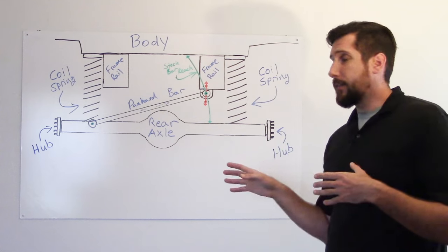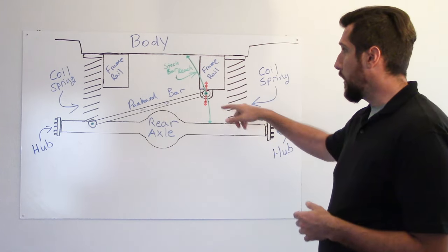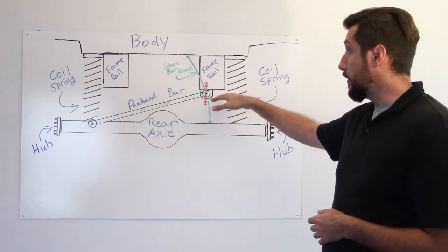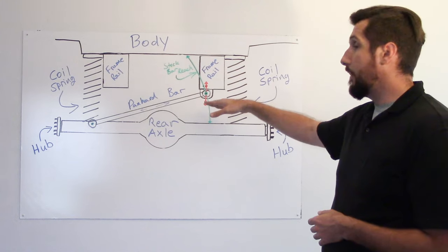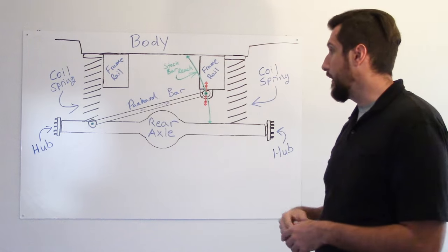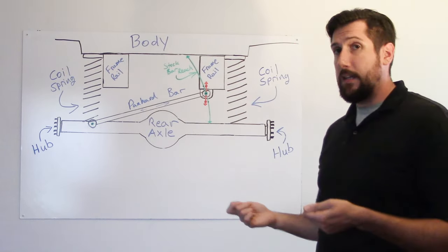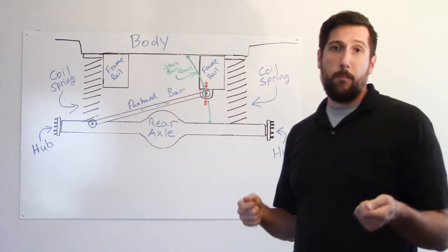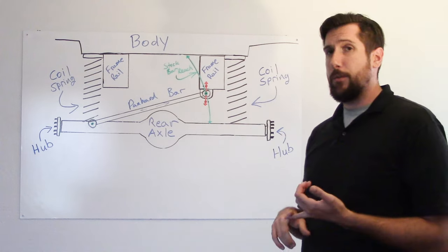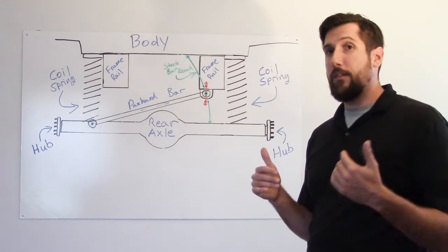So just make sure that you're getting the right bar for the application, and it should be good. I know on the lifted trucks, there is a second option that you can use, and that's a bracket that mounts to the frame rail, and it lowers the mounting point on the frame rail. It brings it down to where the distance is about equal to a factory ride height, so that you're not having to install a different panhard bar. With a bracket, you've got to drill holes in the frame and bolt it in there, and then even then, there's no fine tuning.